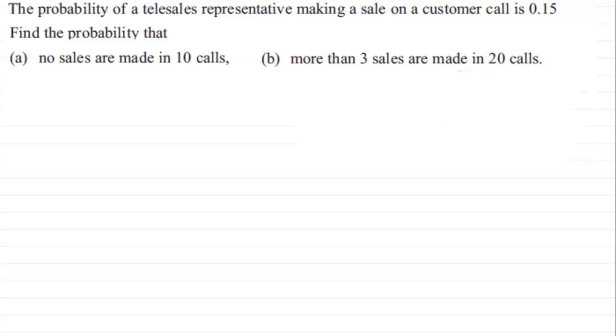Hi, now here we've got a typical question where we've got to decide what distribution we are dealing with. I'll just read it back to you. We've got the probability of a telesales representative making a sale on a customer call is 0.15.